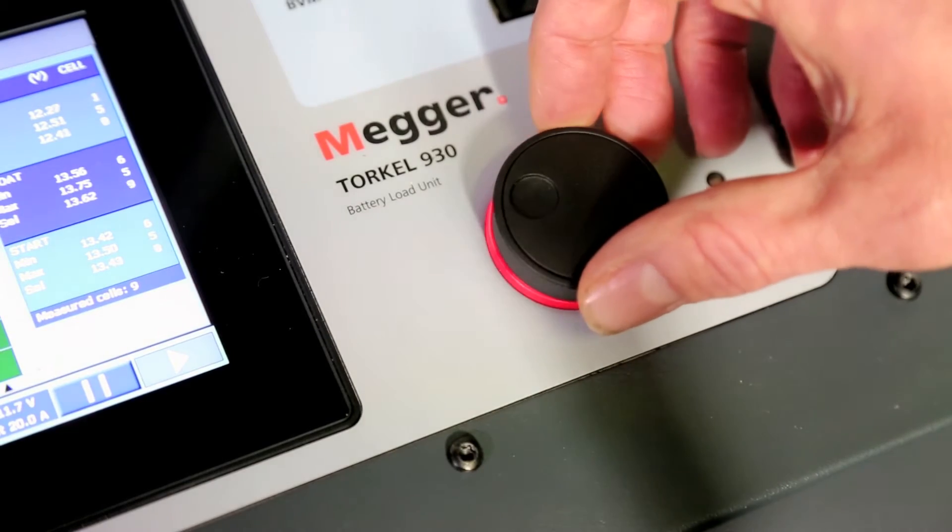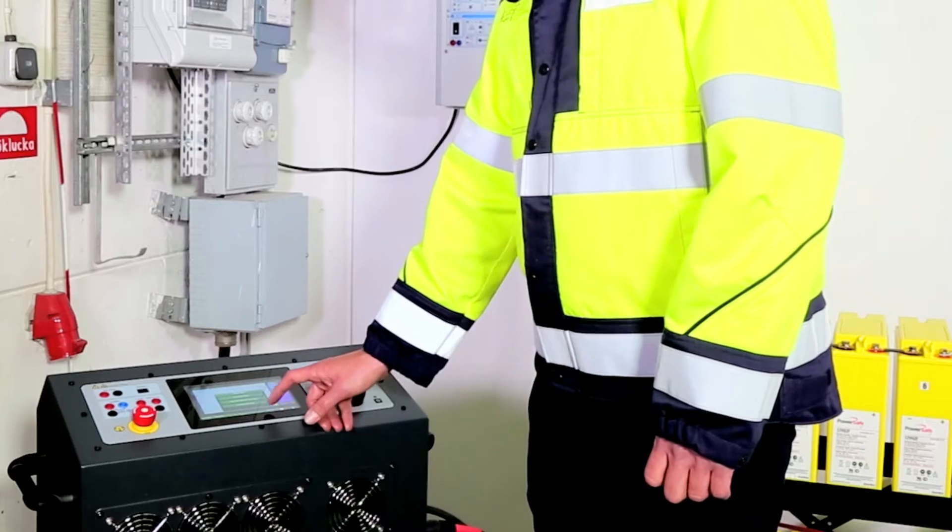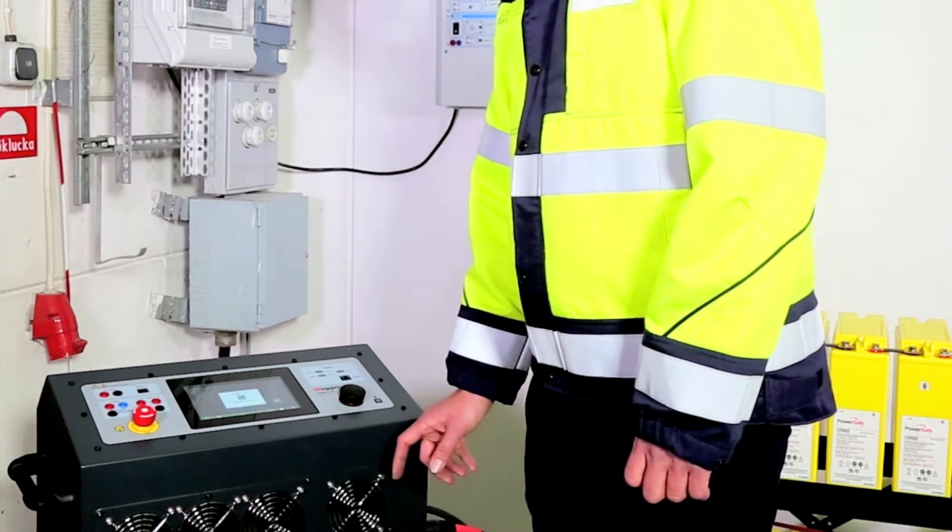This means shorter testing times and since tests can be run while the battery is still in service, Torkel 900 ultimately reduces outage times.